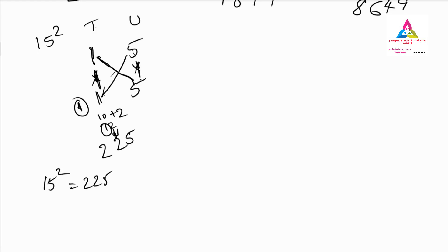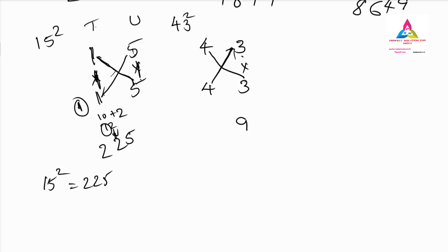Once you understand this concept, it's easy to find the answer within 5 to 10 seconds. Next example: 43 squared. Write 43 one below the other. First multiply unit digits: 3 into 3 is 9. Next cross-multiply: 4 times 3 is 12, and again 4 times 3 is 12; 12 plus 12 is 24. Write 4, carry 2. Then multiply tens digits: 4 into 4 is 16 plus carry 2 gives 18. So 43 squared is 1849.